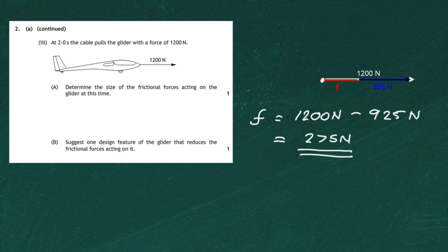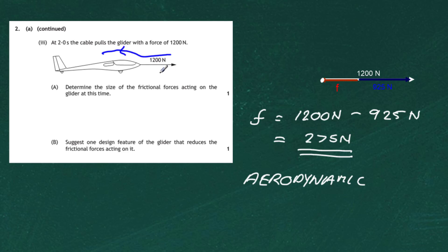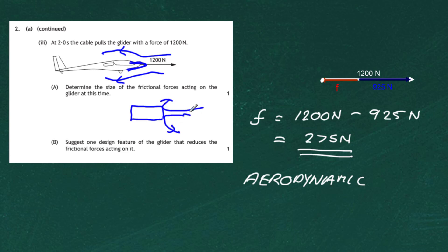Part b asks for one design feature of the glider that reduces frictional forces. The answer is to make it more aerodynamic. An aerodynamic shape lets wind sweep smoothly over the nose, reducing air resistance. A flat front face would cause the wind to slam into it, crushing up and increasing frictional forces. So the key word here is aerodynamic.